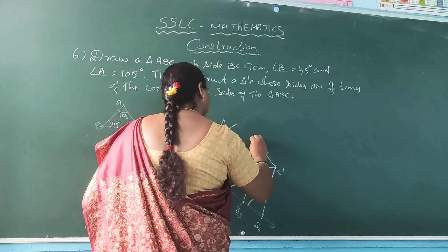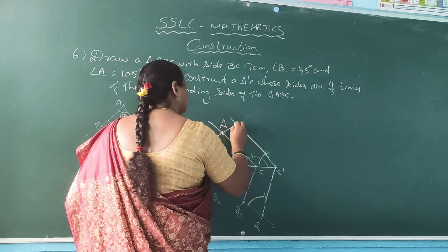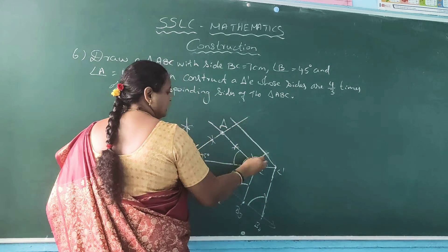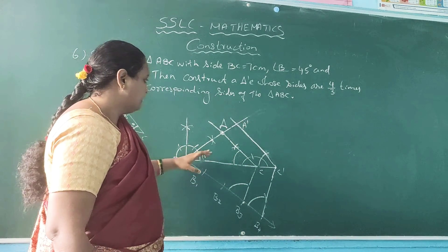Draw your straight line passing through this. So these 2 lines will intersect here. This is nothing but A dash.